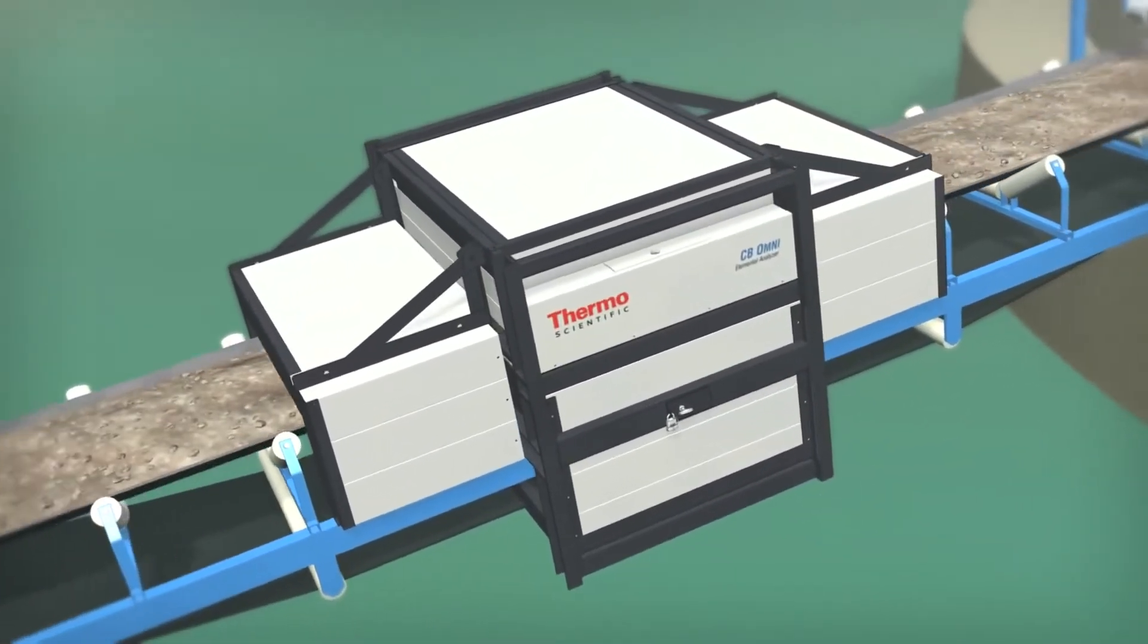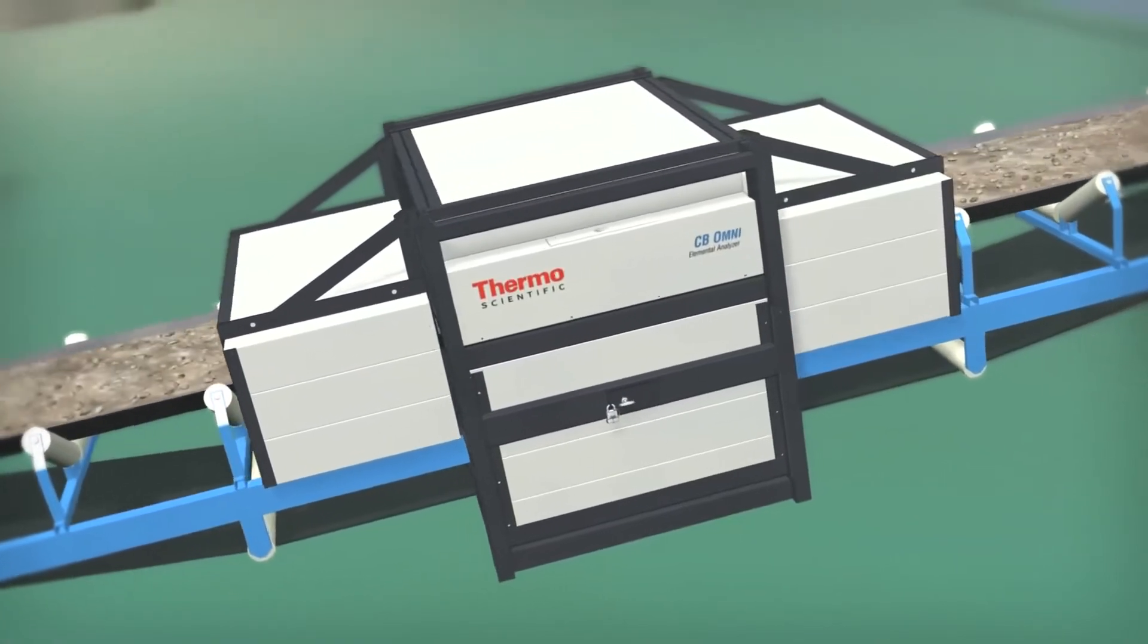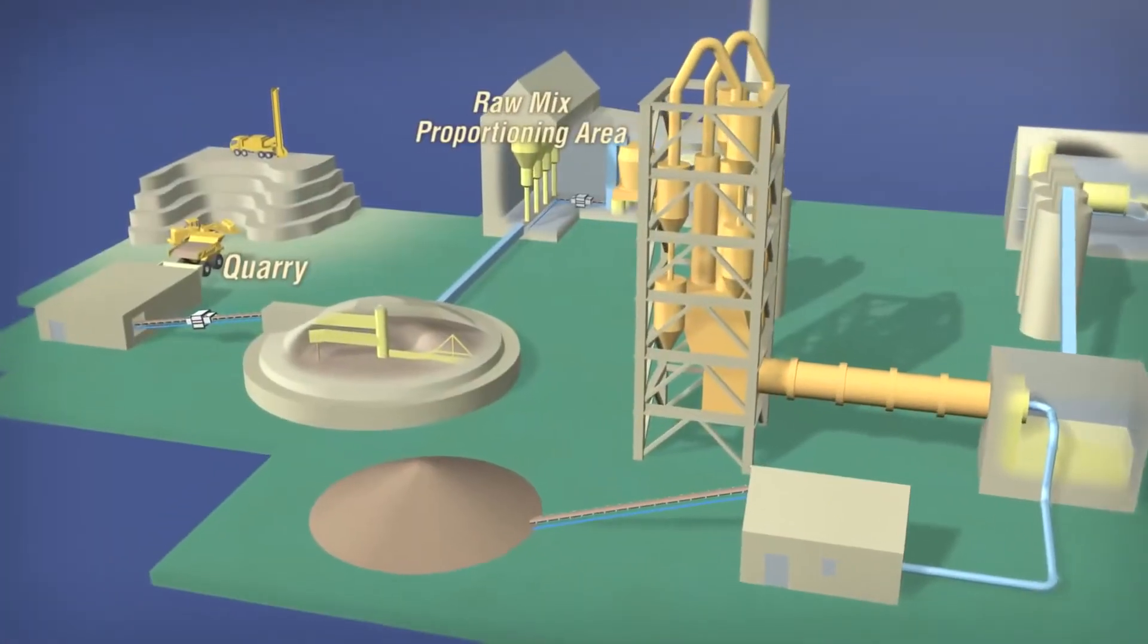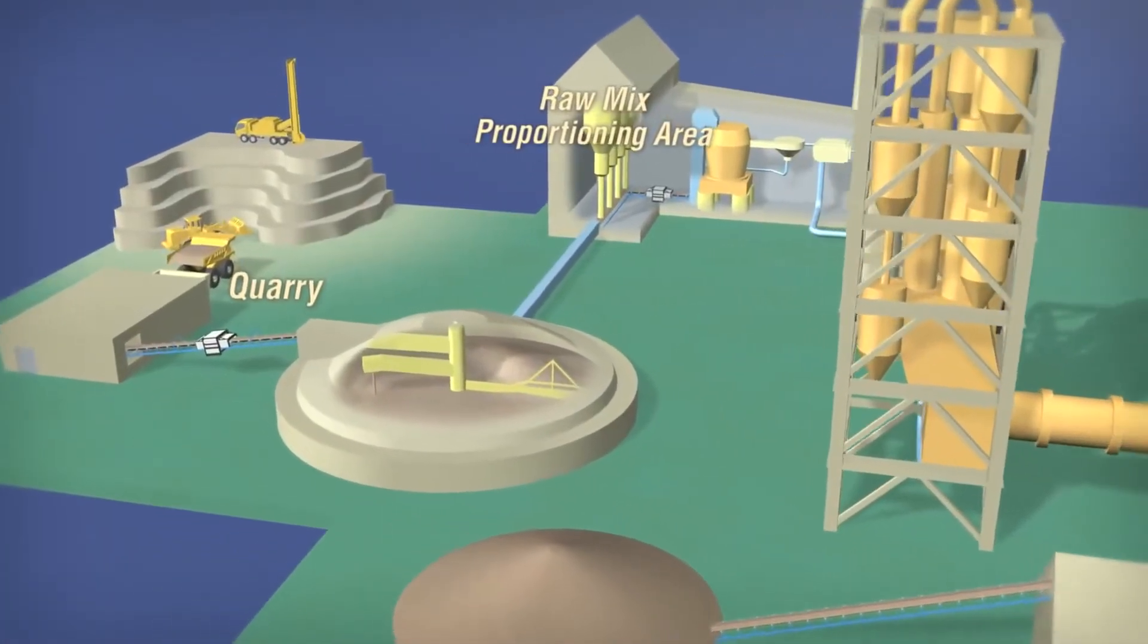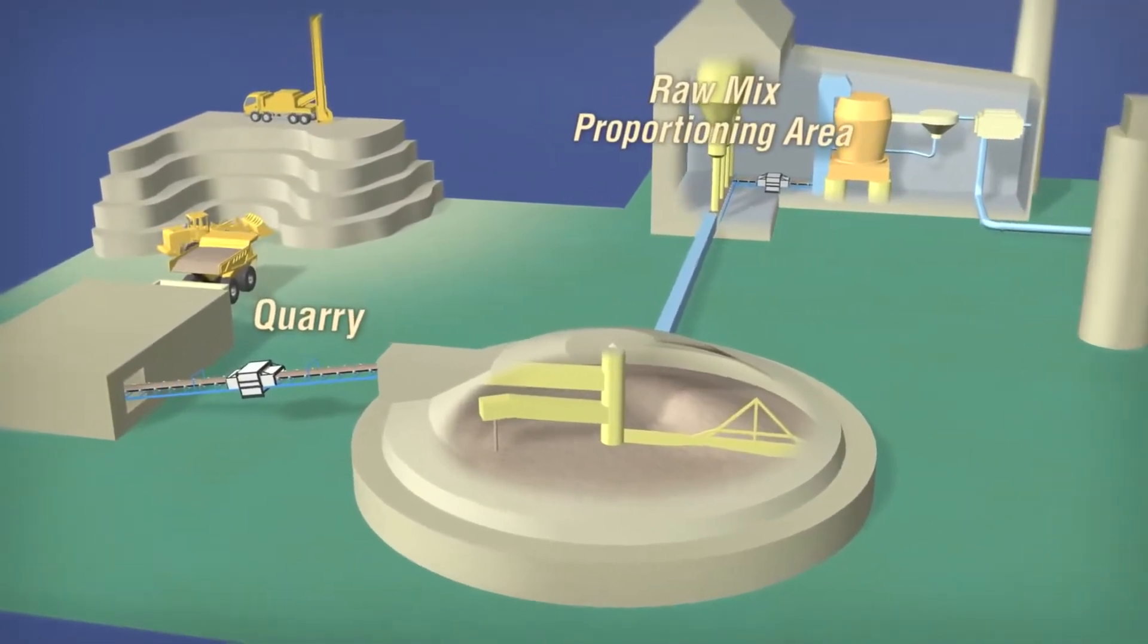Thermo Scientific CB Omni brings efficiency to cement production, predominantly at two locations within the plant: the quarry and the raw mix proportioning area.